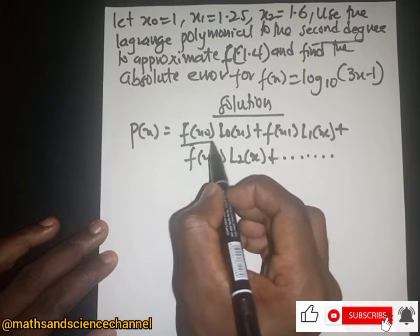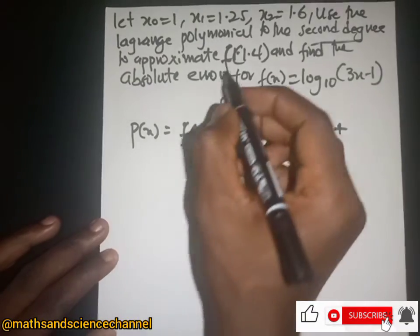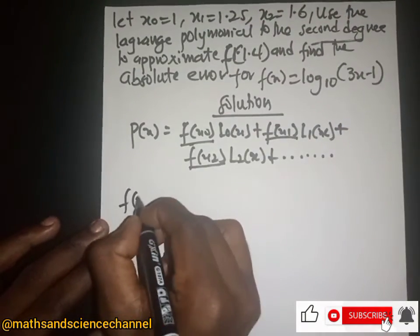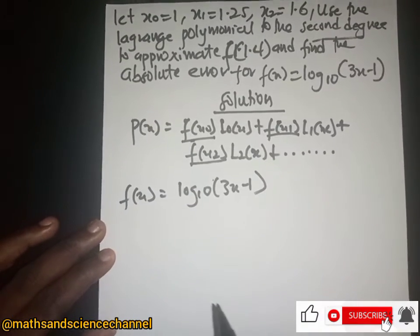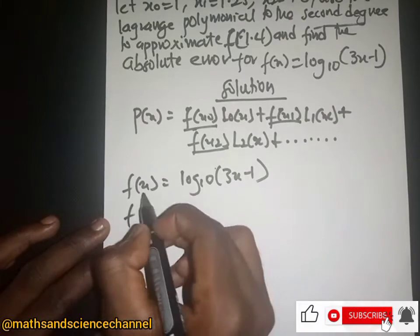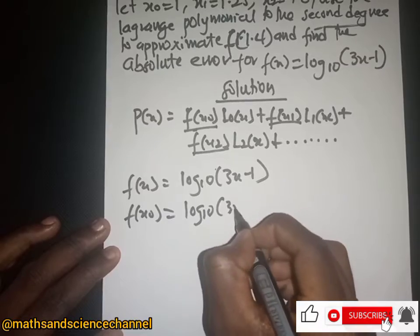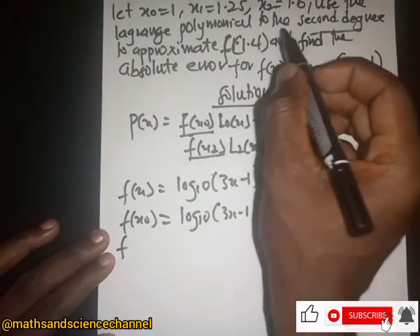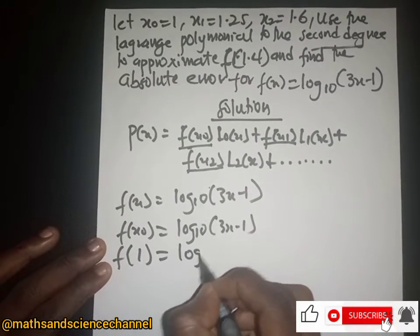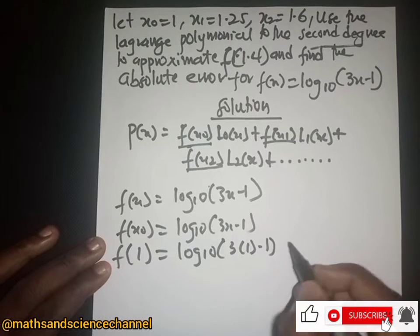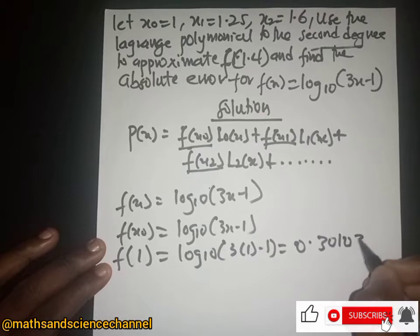We need to find f(x₀), f(x₁), and f(x₂). The function f(x) = log base 10 of (3x - 1). For f(x₀), x₀ was given as 1, so we have log base 10 of (3×1 - 1), and this gives us 0.30103.